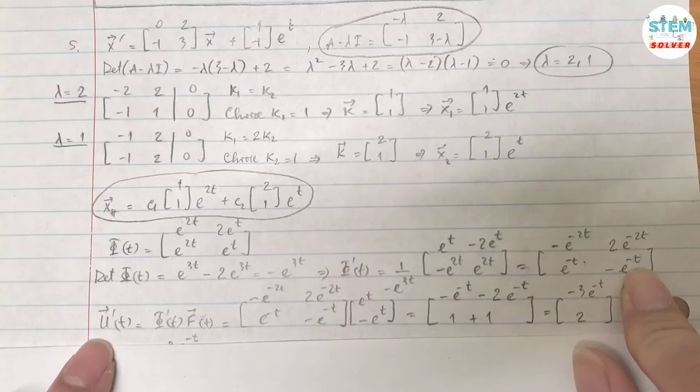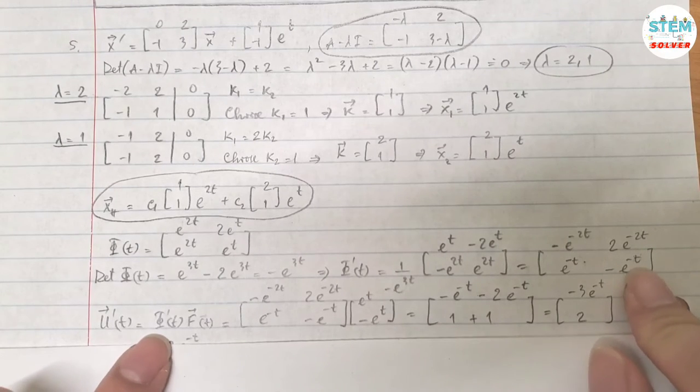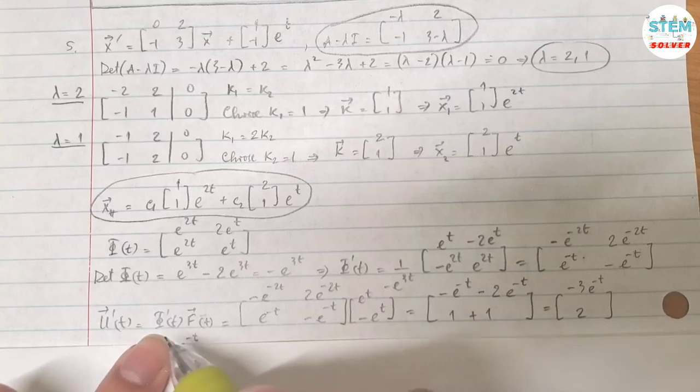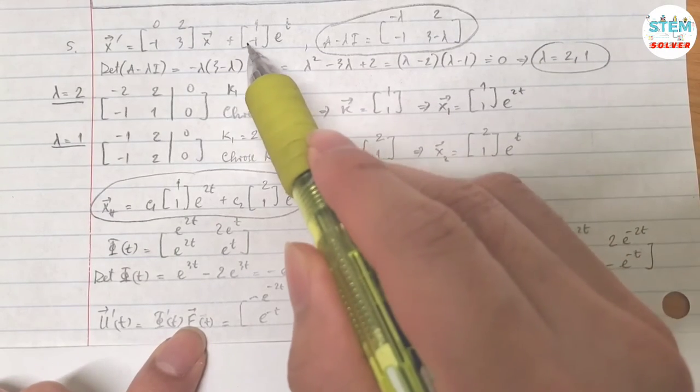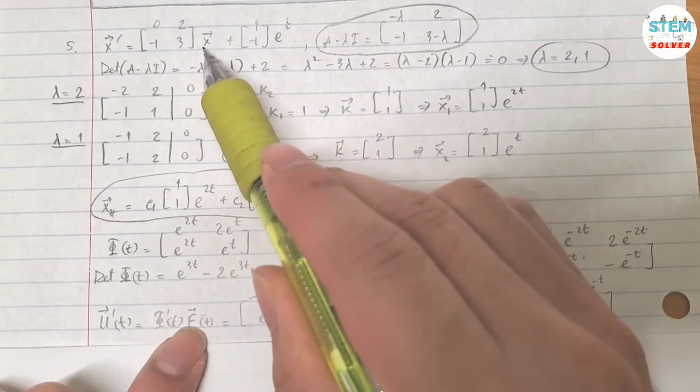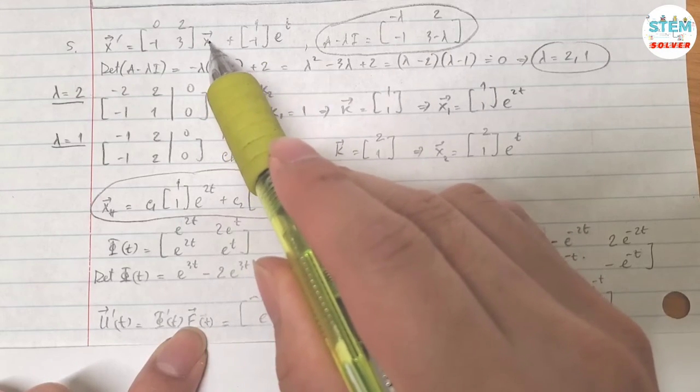Then you are going to find vector u-prime, which is equal to inverse phi times f(t). What is f(t)? f(t) is whatever is left over when you multiply by vector x.